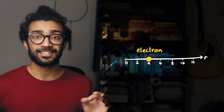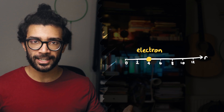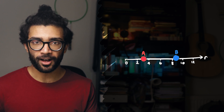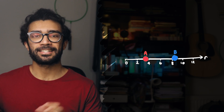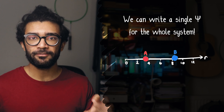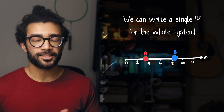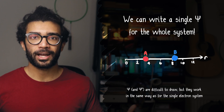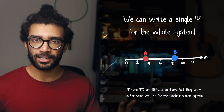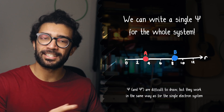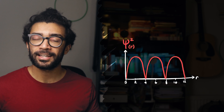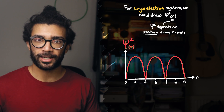But now let's consider a more complicated system. Let's say instead of consisting of one electron, our system consists of two different particles. It doesn't matter what these particles are — all that matters is that they're also restricted to moving along this straight line. In quantum mechanics it turns out that we can write a single wave function for this entire system. So we've got two particles — particle A and particle B — and psi squared works in exactly the same way as when we had our single particle system.